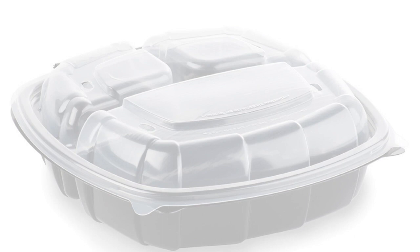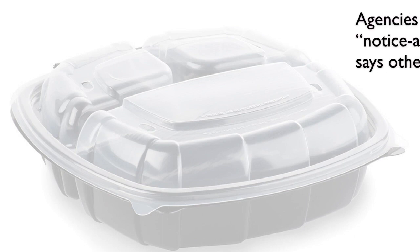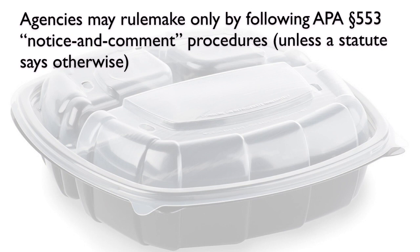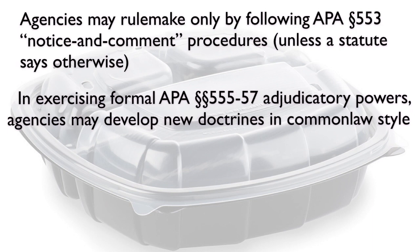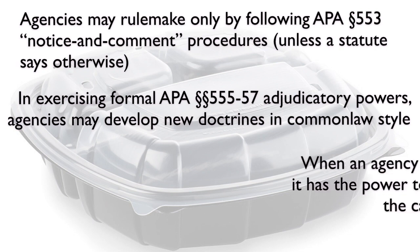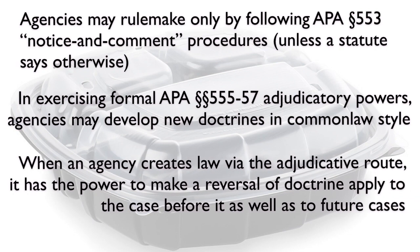Speaking of takeaways: agencies may rule-make only by following APA Section 553 notice and comment procedures, unless the statute says otherwise. In exercising formal APA Sections 556-557 adjudicatory powers, agencies may develop new doctrines in common law style. When an agency creates law via the adjudicative route, it has the power to make a reversal of doctrine apply to the case before it, as well as to future cases.